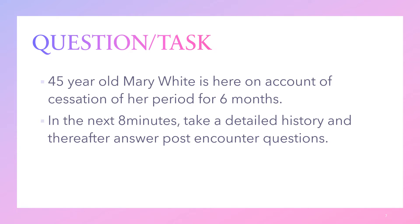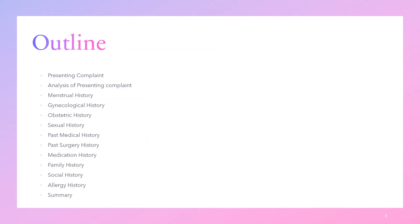This is the task at hand. A 45-year-old Mary White is here on account of cessation of her period for six months. In the next eight minutes, take a detailed history. Thereafter, answer post-encounter questions. This is the outline we're going to be following.